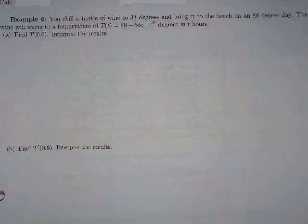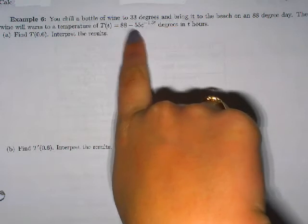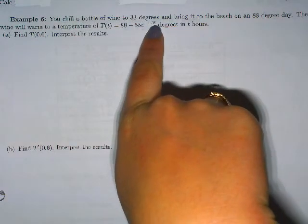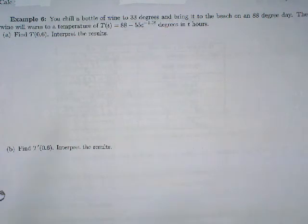You chill a bottle of wine to 33 degrees and bring it to the beach on an 88 degree day. The wine will warm to a temperature of T(t) equals 88 minus 55e to the negative 1.5t degrees in t hours.